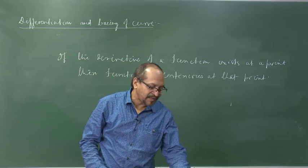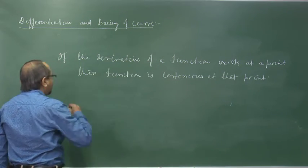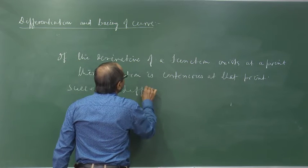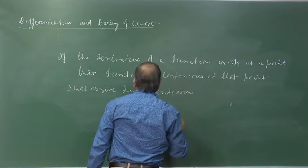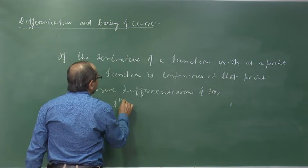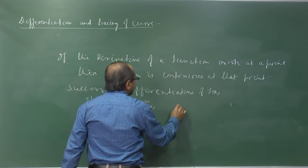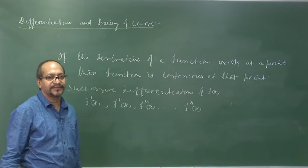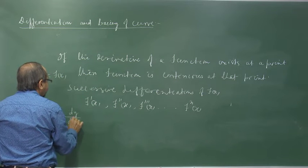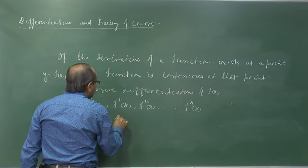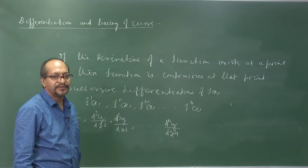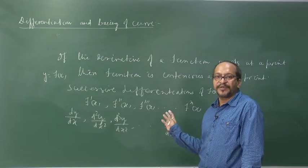The first differentiation gives f'(x), and successive differentiation is performed many times. We write the first derivative as f'(x), the second as f''(x), the third with three dashes, and the nth derivative as f⁽ⁿ⁾(x). Alternatively, if y = f(x), the first derivative is dy by dx, the second is d²y by dx², the third is d³y by dx³, and so on — the nth derivative is dⁿy by dxⁿ.